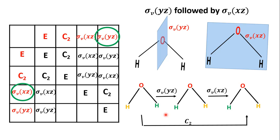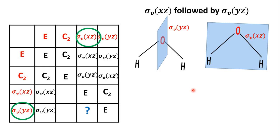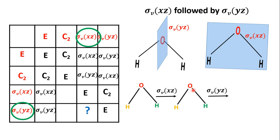Next, σVxz followed by σVyz: first perform σVxz — the molecular plane — so nothing happens to atom positions. Then σVyz, the plane through oxygen perpendicular to the molecular plane, interchanges the hydrogen atoms. The net result is once again an interchange of hydrogen atoms. Since there is no C2 in the column or row at this position, the result is C2.